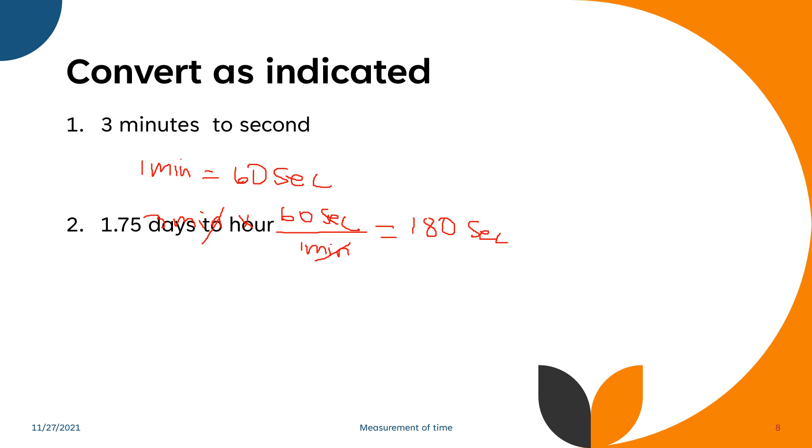Number two, we have 1.75 days to hours. We know that for one day we have 24 hours. There are 24 hours in a day, so we could say that 1.75 days times 24 hours over one day. We need to multiply 1.75 times 24.